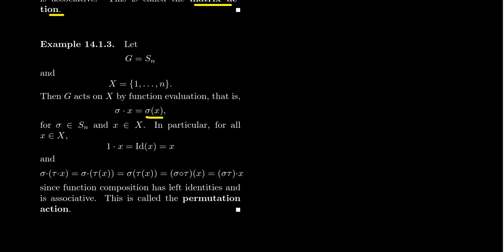What we're really doing here is: if we take the general linear group or the symmetric group, we're taking some collection of functions that forms a group, and we're setting the set X to be the domain of those functions. For multiplication to be defined — the operation being composition — the domain and codomain must be the same thing, which is why we can compose them and get a group operation. So whenever our elements are functions with the same domain and codomain, we can always form a group action by setting X to be that domain, and the group action is just function evaluation.